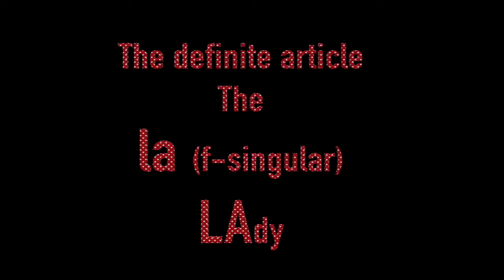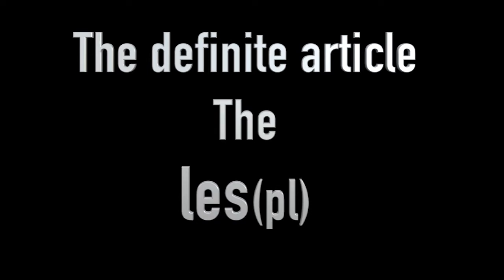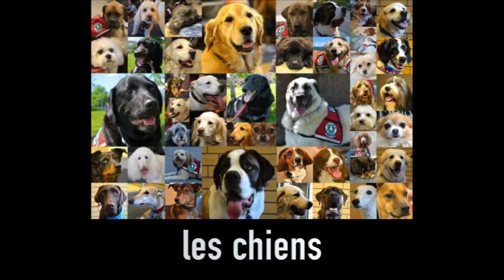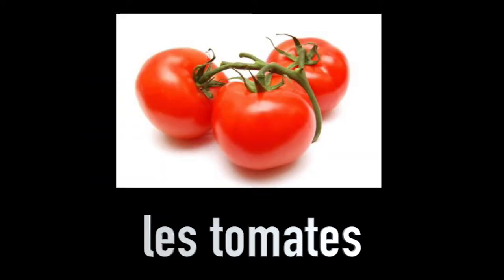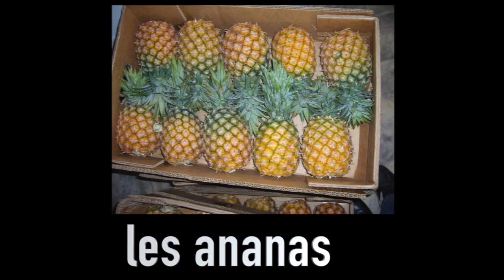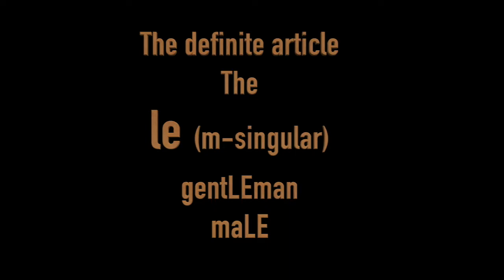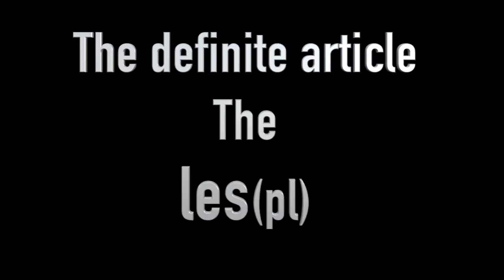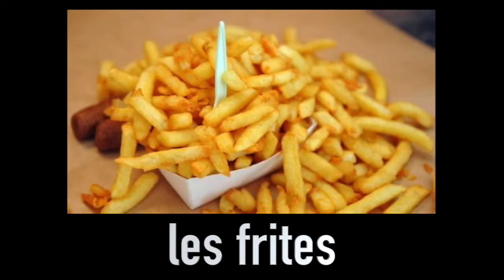So lots and lots of nouns that are feminine use 'la'. Now in French, as soon as you want 'the something' and there's more than one of them, we have to use the plural word for 'the', which is 'les'. For example, the dogs: 'les chiens', the tomatoes: 'les tomates', the pineapples: 'les ananas'. So to recap: masculine nouns use 'le' if singular, feminine nouns use 'la' if singular, and if we have more than one of anything, whether masculine or feminine, we say 'les'. For example, 'les frites' — the chips.